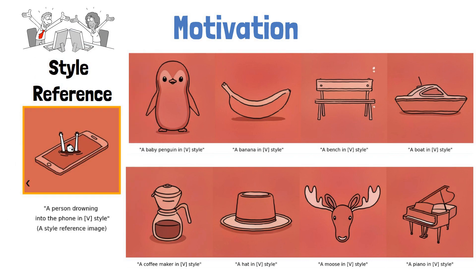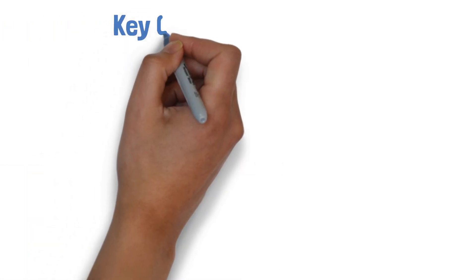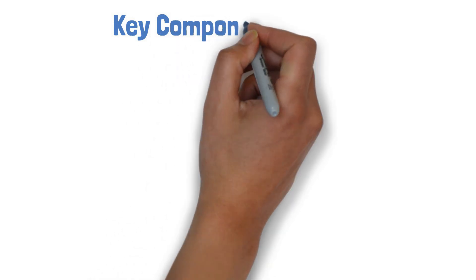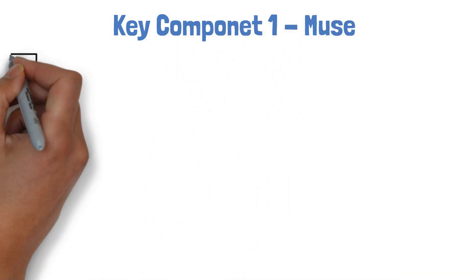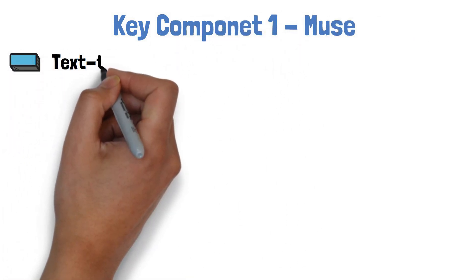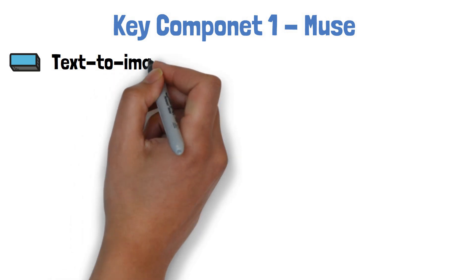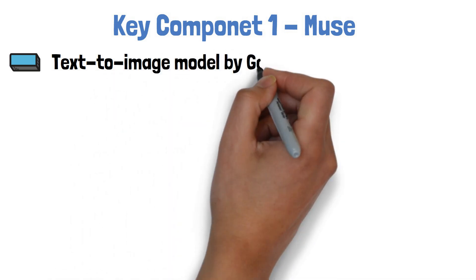So let's move on to talk about how they were able to do that. StyleDrop is built using three crucial components, which we will review now. The first component is Muse, a text-to-image generation model which was presented by Google earlier this year.